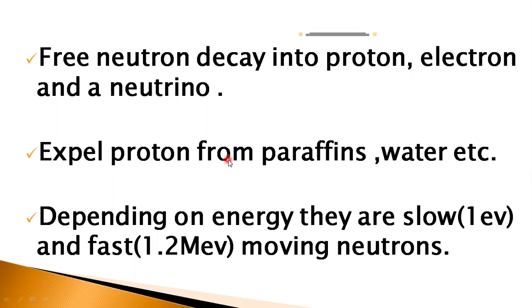They can expel proton from paraffin, water, or hydrogen-containing molecules. And there are two types of neutrons depending on the energy: slow neutron and fast neutron. The neutrons which move with energy approximately about 1 electron volt are slow-moving neutron, while the neutrons which are moving with energy 1.2 mega electron volt are called fast-moving neutron.